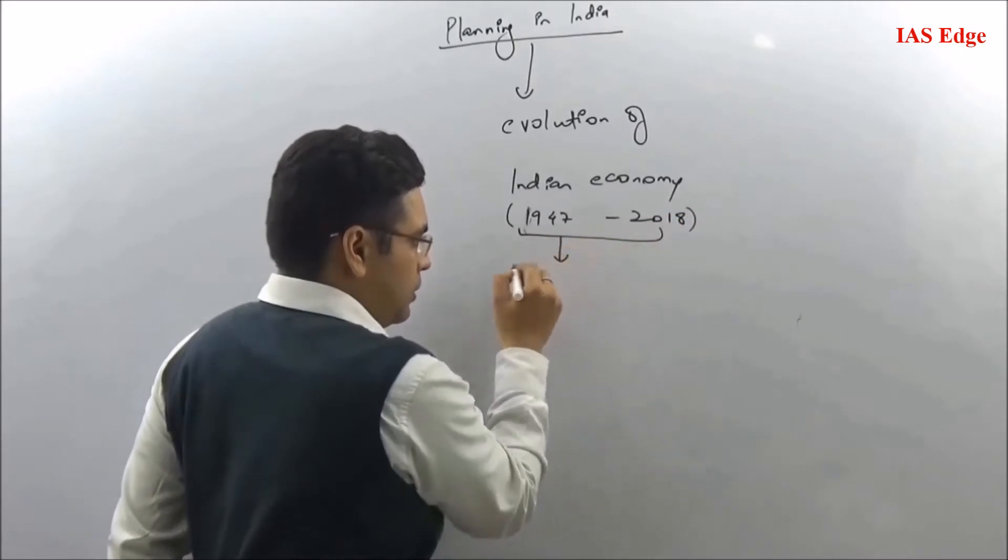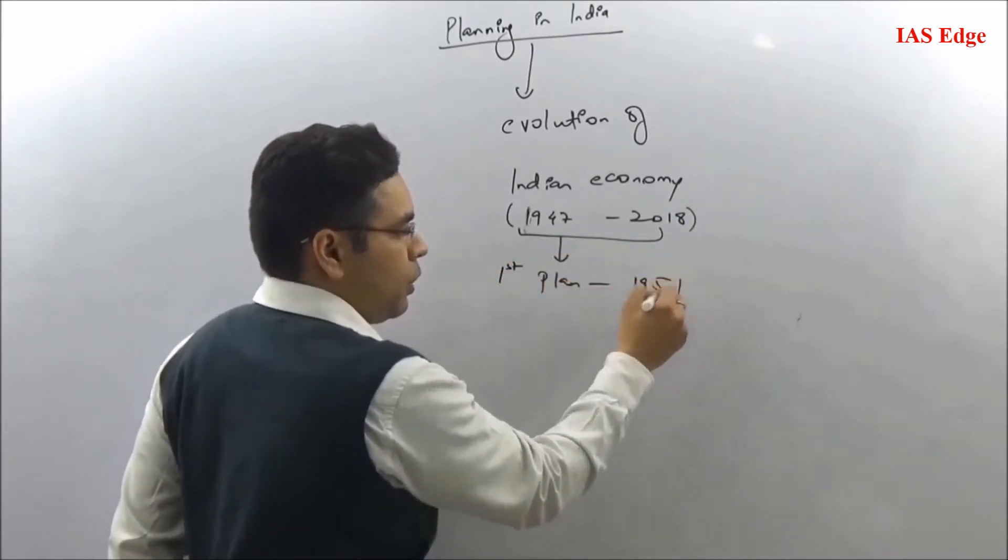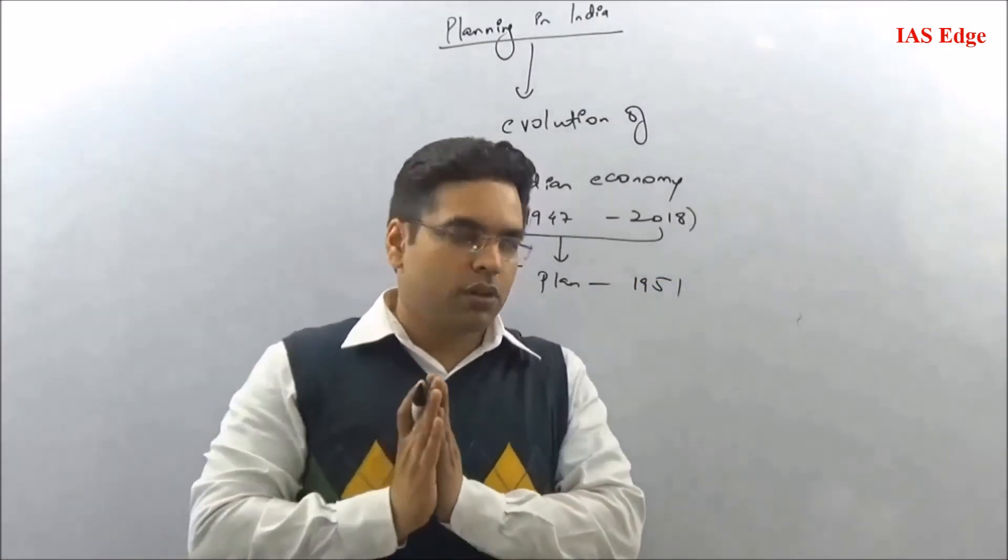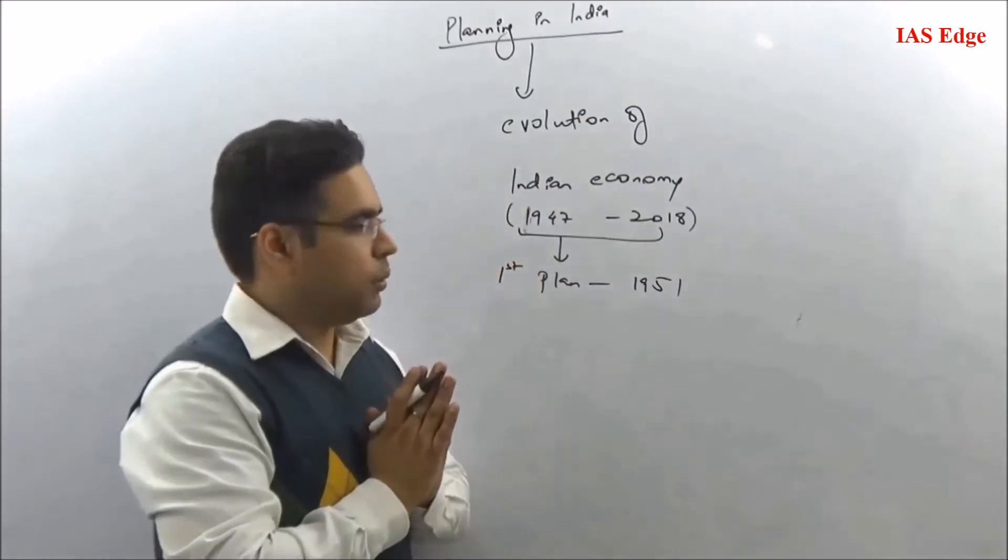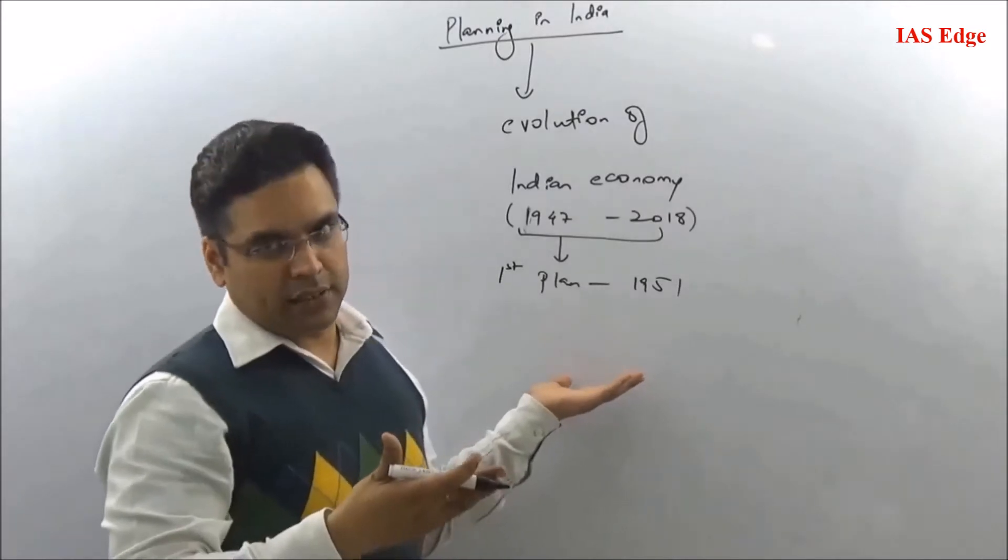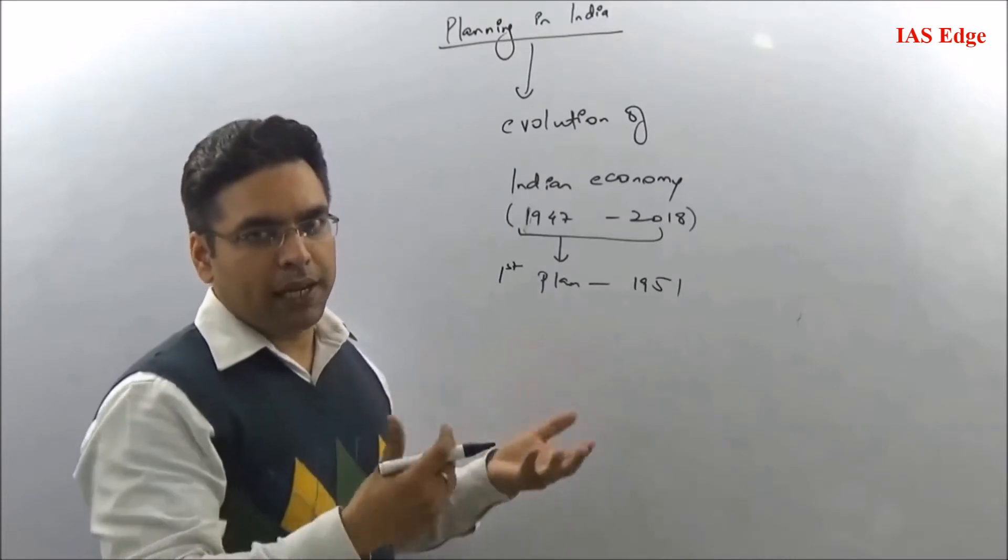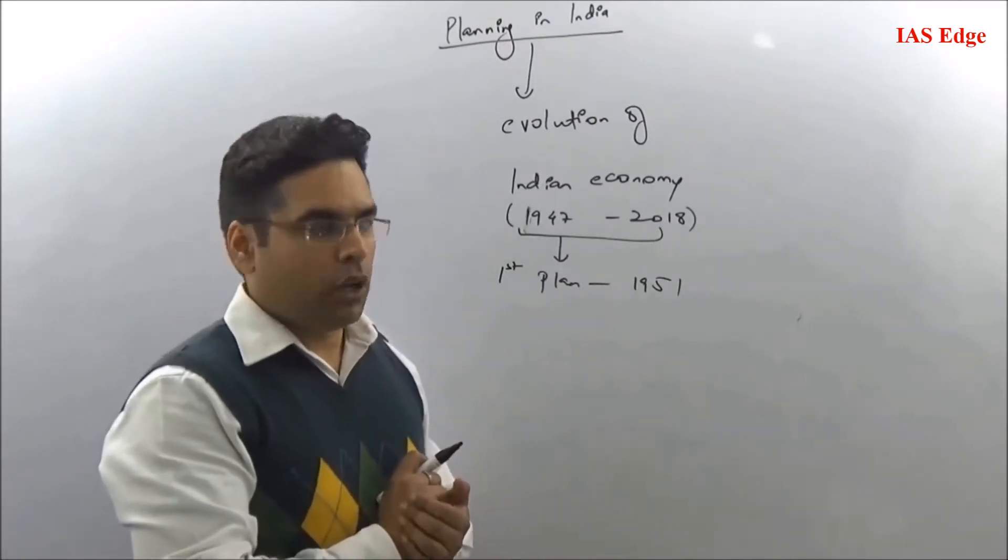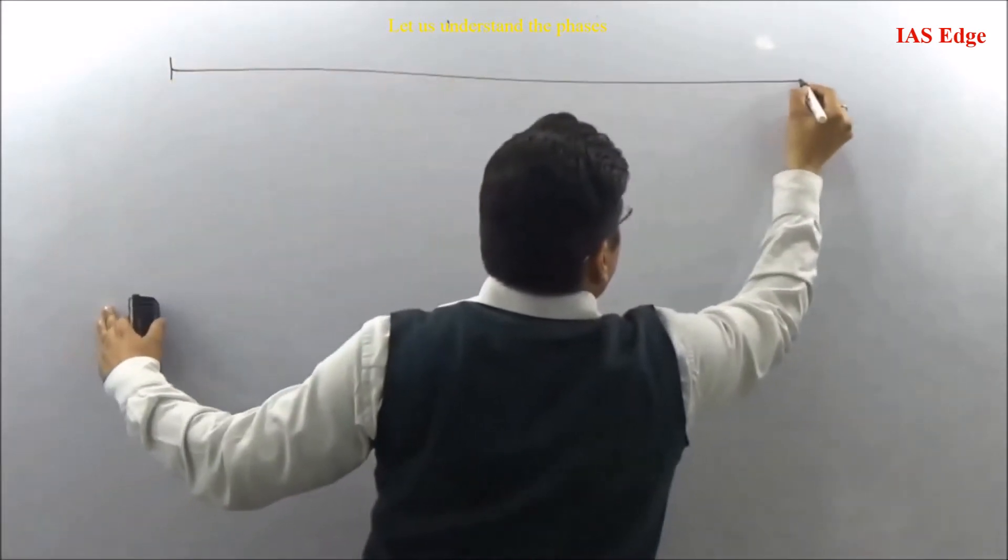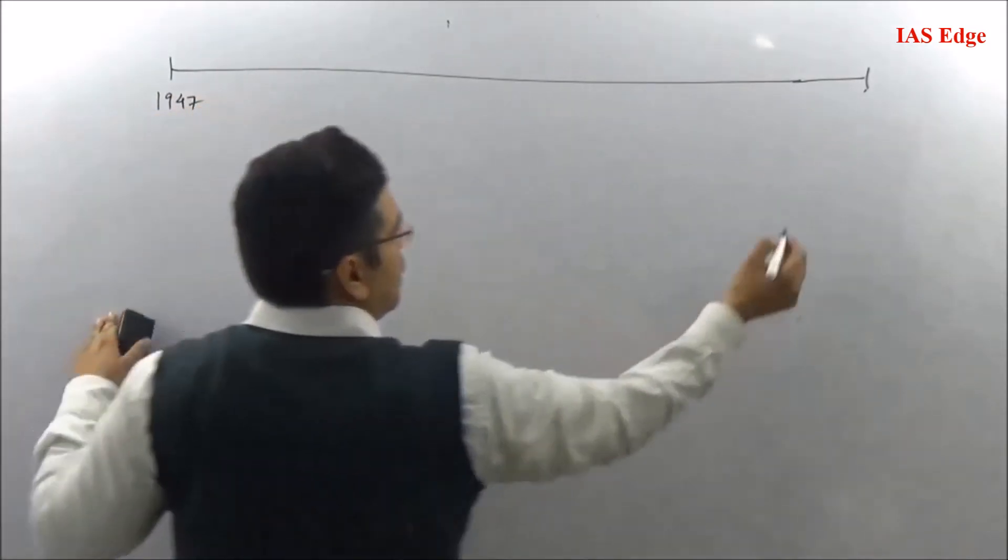The first plan started in 1951, so the period is from 1951 to 2017, the last plan was in 2017. In UPSC, the questions come from trend areas, looking at trends, the evolution, the concepts applied. You need to have a macro picture about the entire topic.